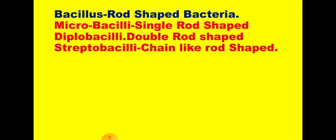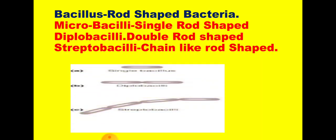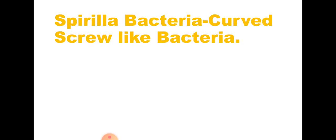Another type is strepto bacilli, which means rods arranged like a chain. Here is the image in front of you: single bacillus, diplo bacillus with two rods connected together, and strepto bacilli with rods joined together like a chain.